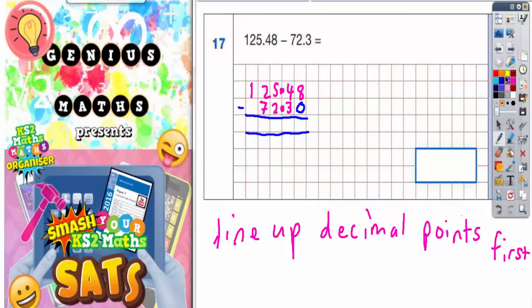Once we've got that set up nicely like that, we are ready to answer it. So we always start with the top number. 8 take away 0 is still 8. 4 take away 3 is 1. 5 take away 2 is 3. 2 take away 7 we can't do, so we need to borrow one. Cross out the 1 and that becomes 0, and the 1 you've borrowed turns this 2 here into a 12. So now we can do it.